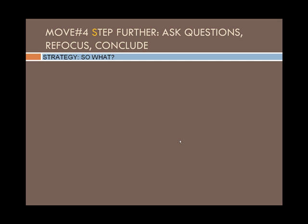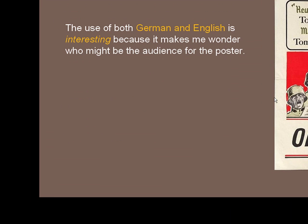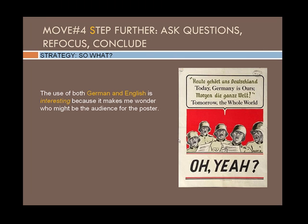The first strategy is called 'So What?' Let's return to the World War II poster we looked at during Move 3, Noticing and Ranking. We noted that the use of German and English was interesting because it called into question who the audience might be. It's time now to look at that observation and push it further by repeatedly asking, 'So What?' until we begin to arrive at an idea.